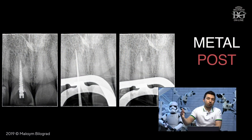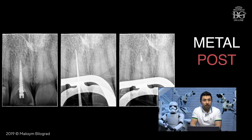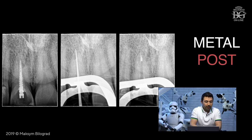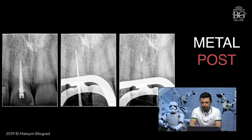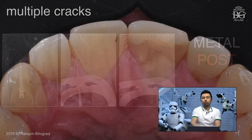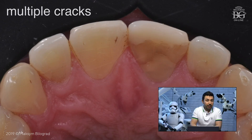Here you can see some steps of the endodontic treatment. From the left side you can see that the central incisor has a pretty long metal post, and also a small resorption area. I think that small resorption was the reason why this tooth developed discomfort. You can also see some MTA plaque.